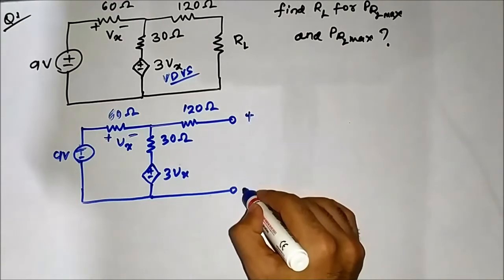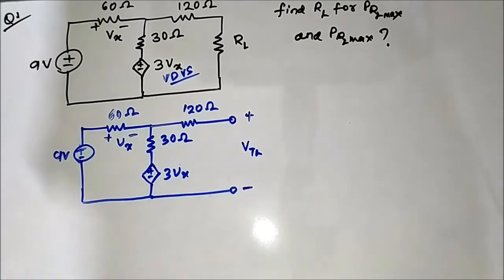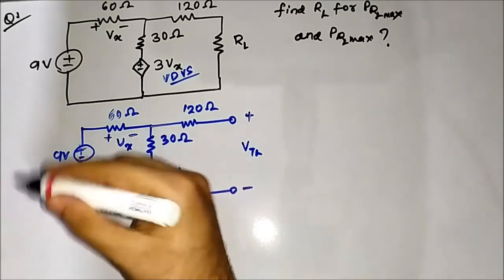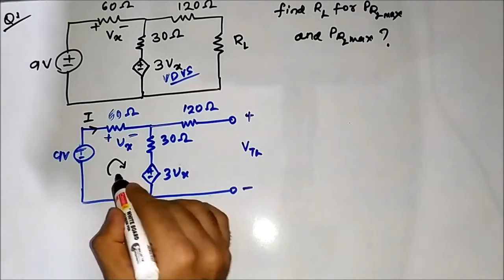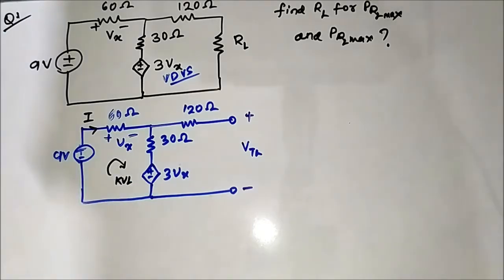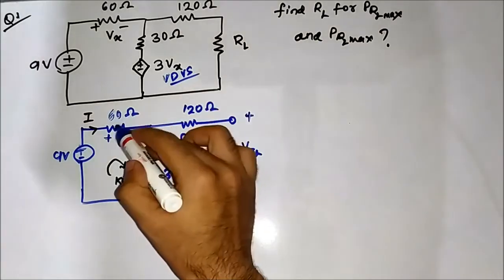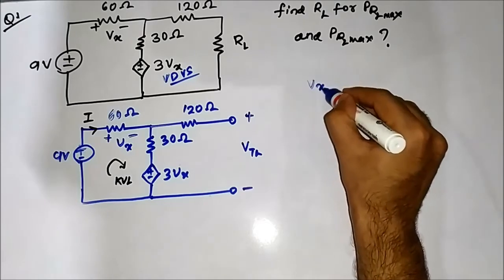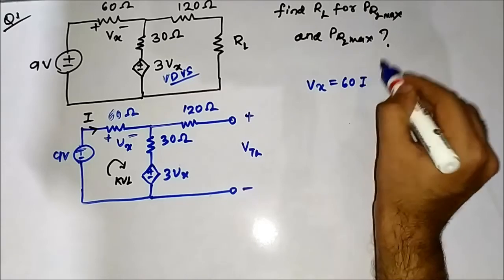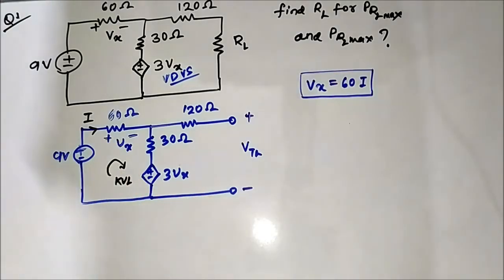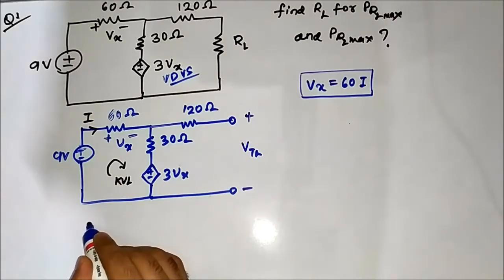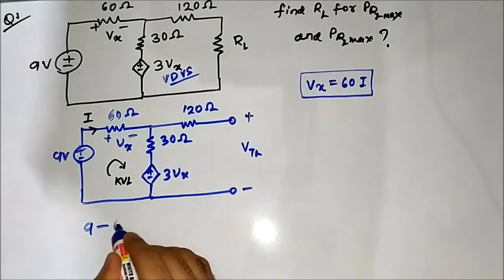We have to find the open circuit voltage VTH. Let us assume the current flowing through the closed loop is I. We will apply KVL in this closed loop to get the value of I. An important relationship to establish is that the voltage drop across the 60 ohm resistor, VX, is equal to 60I. Applying KVL: 9 minus 60I minus VX, which is 60I, minus 30I.